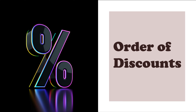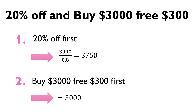Lastly, we're going to talk about the order of discounts. The order of discount also matters. For example, with two discounts — a 20% off and a buy $3,300 threshold — if a company applies the 20% off first, then the buy $3,300 threshold, customers will need to buy $3,750 worth of goods to obtain that discount. However, if the company offers the buy $3,300 threshold first and then the 20% off, customers will only need to buy $3,000 worth of goods to obtain the discount.